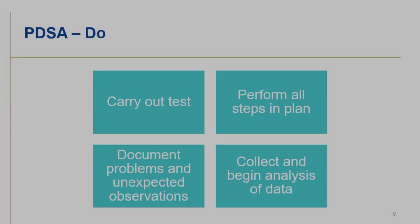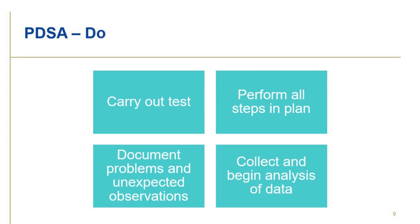The Do stage in the cycle is where the steps in the plan are performed, including the collection of needed data. Improvement teams should strive to collect just enough data to make an informed decision about how to proceed.